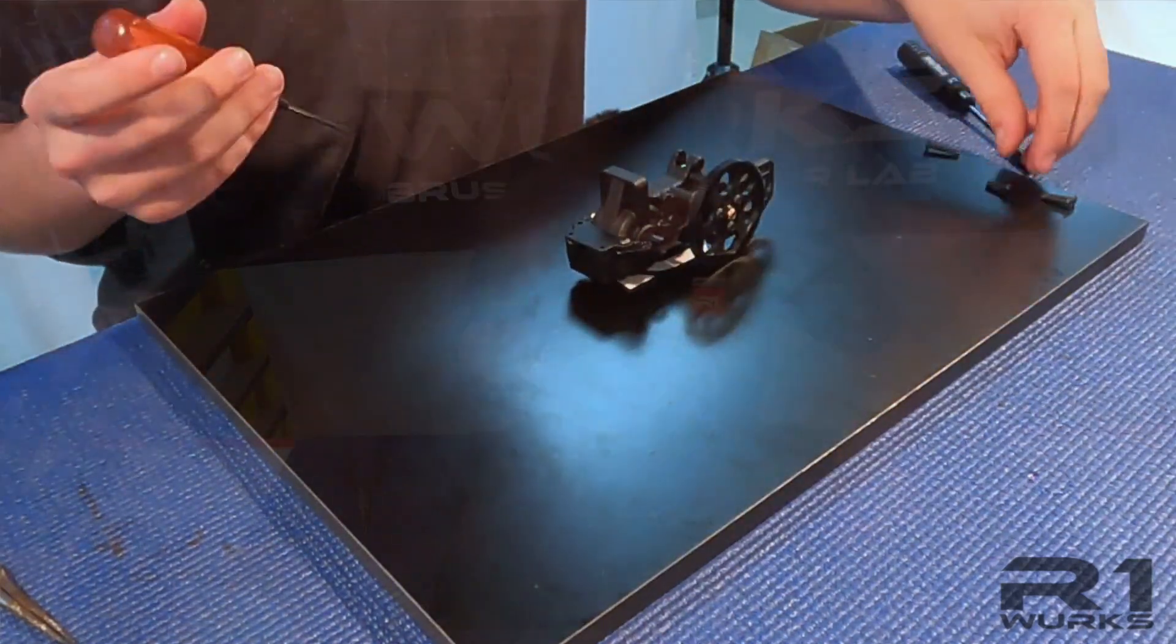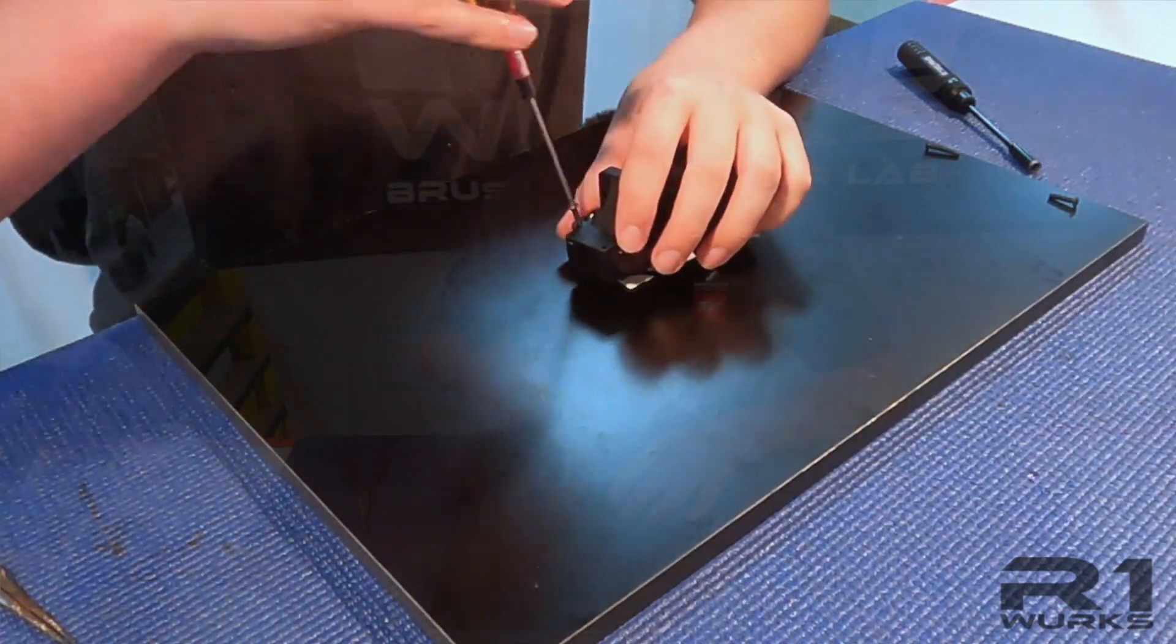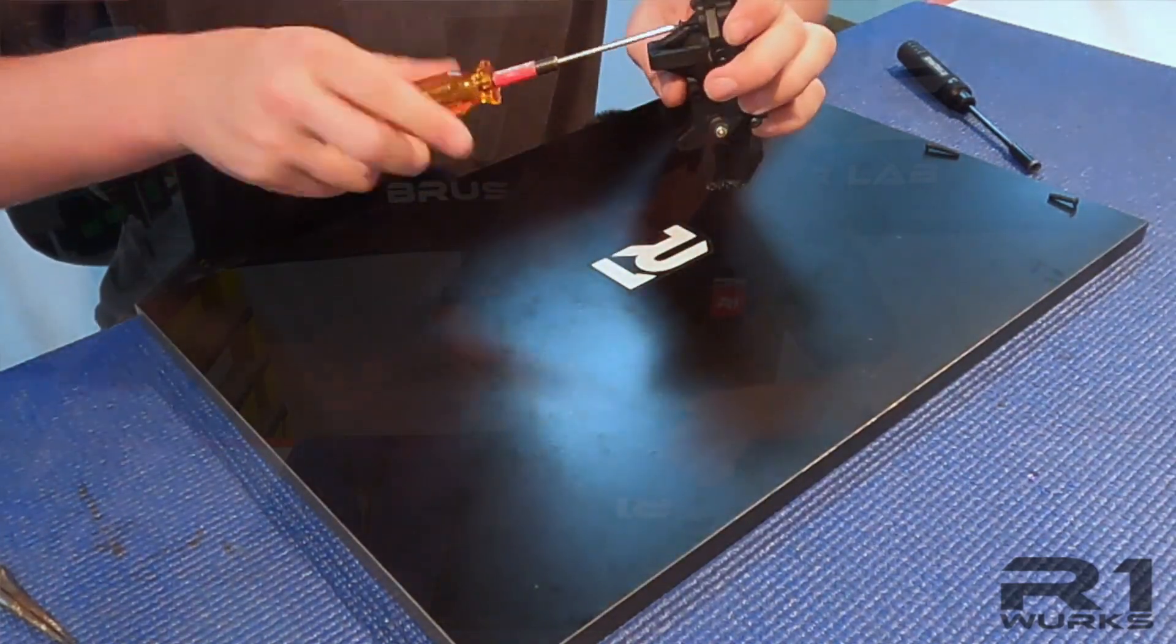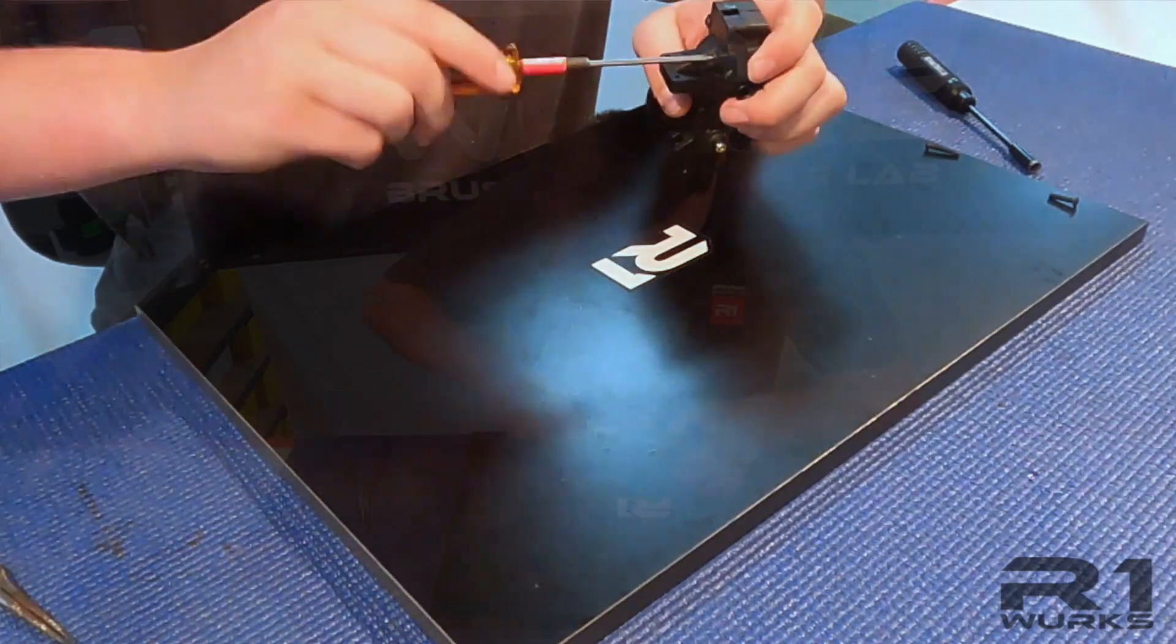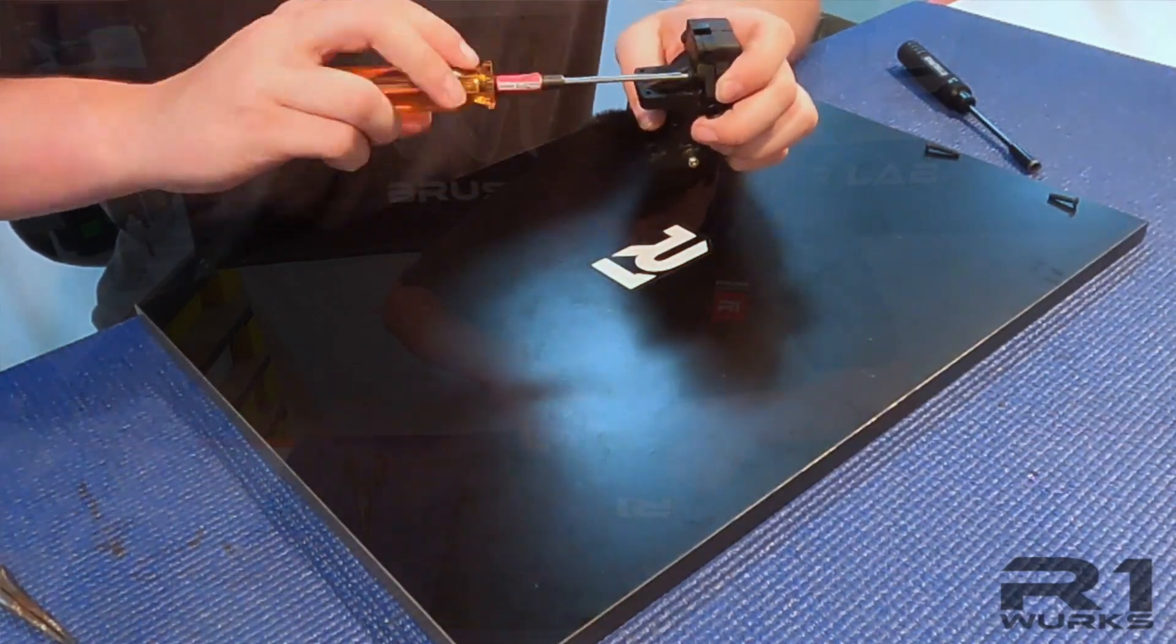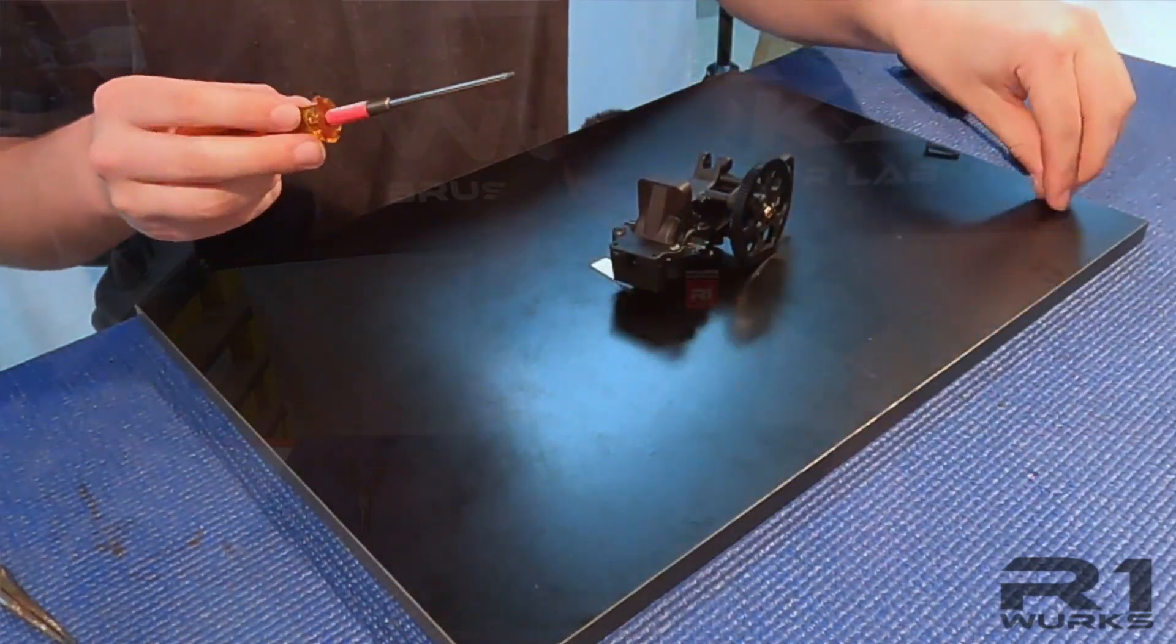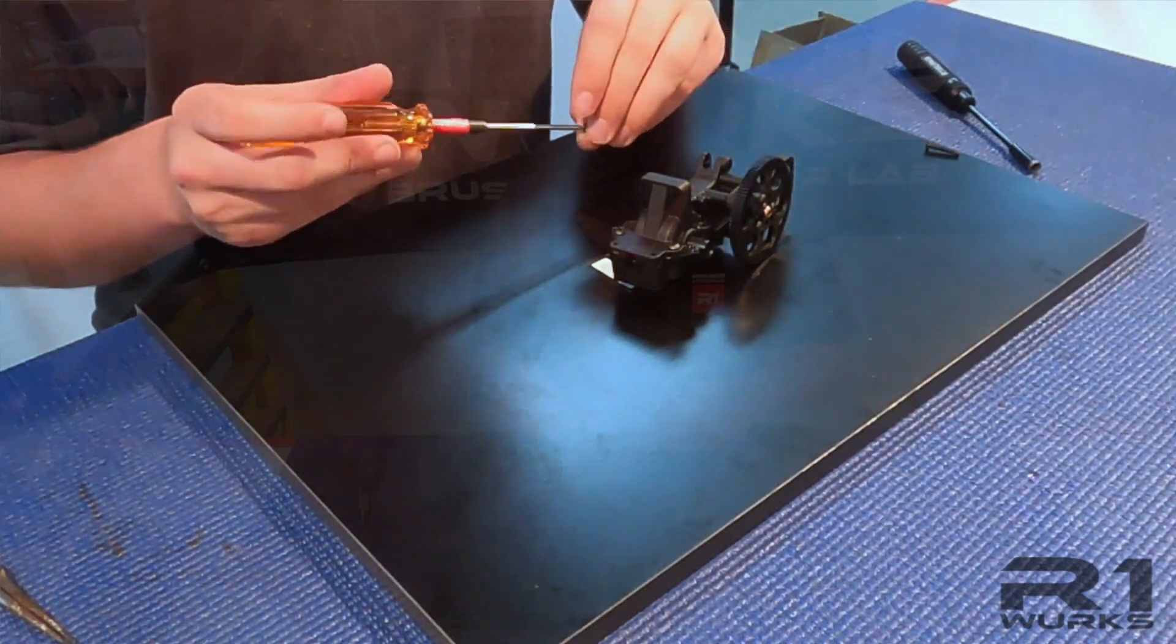For this, just like the diff, we want to tighten across. So we are going to leave these loose at first and then we will tighten fully. Put this in.